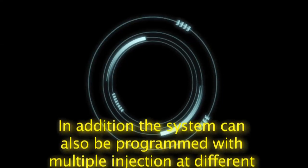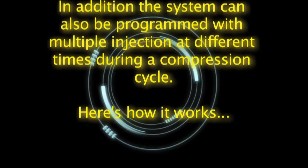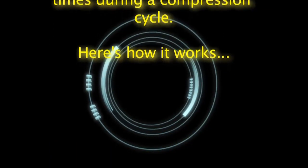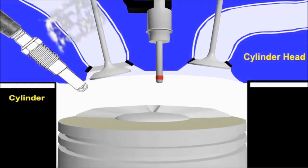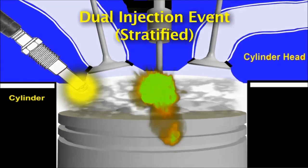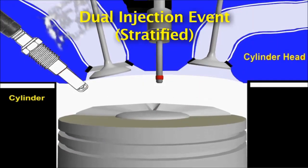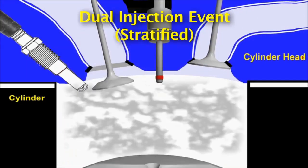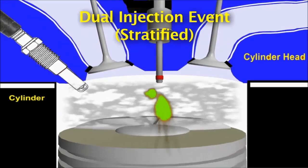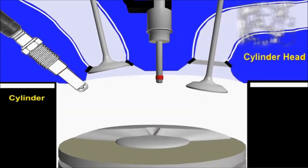The system can also be programmed with multiple injection at different times during a compression cycle. During intake, the ECM commands a very lean injection event, allowing the fuel and air to mix thoroughly. The air swirl is also controlled, and swirl makes the mixture evenly distributed.